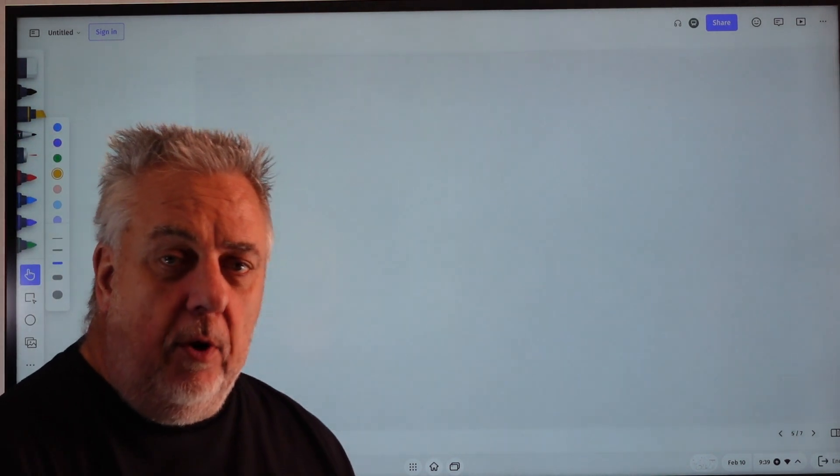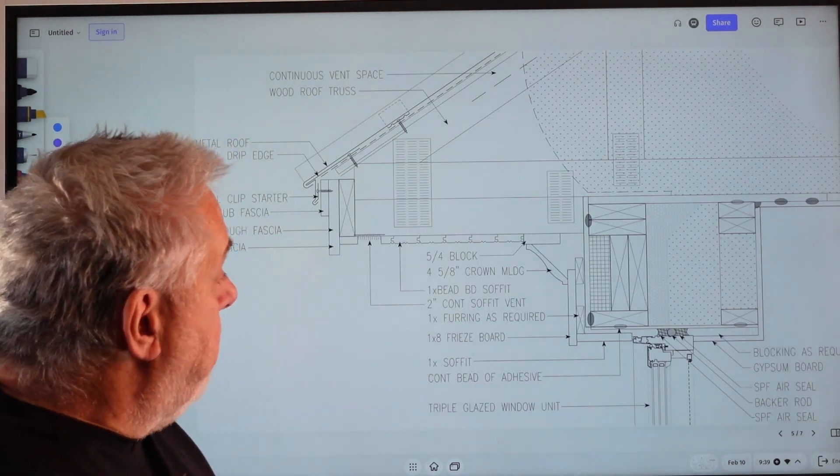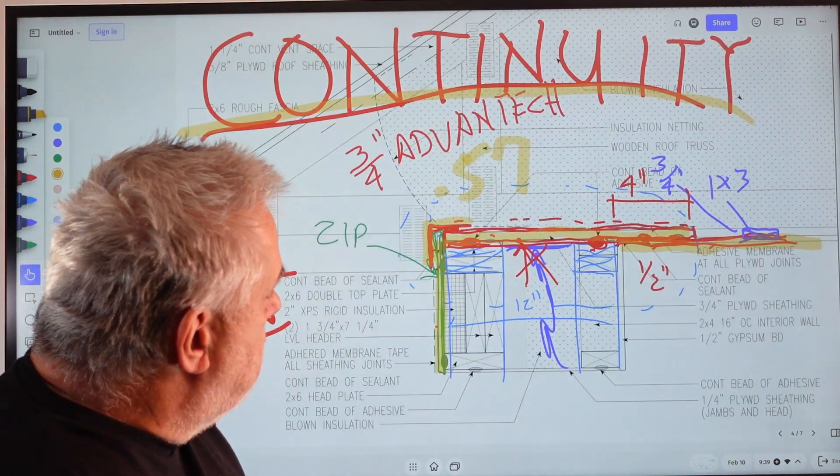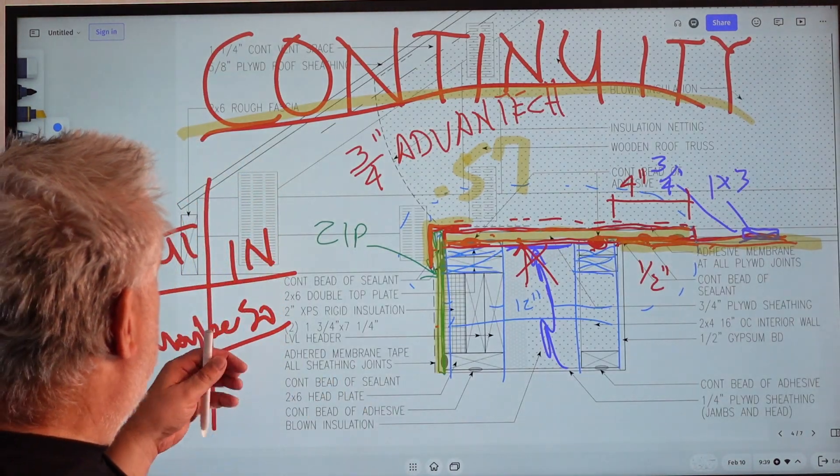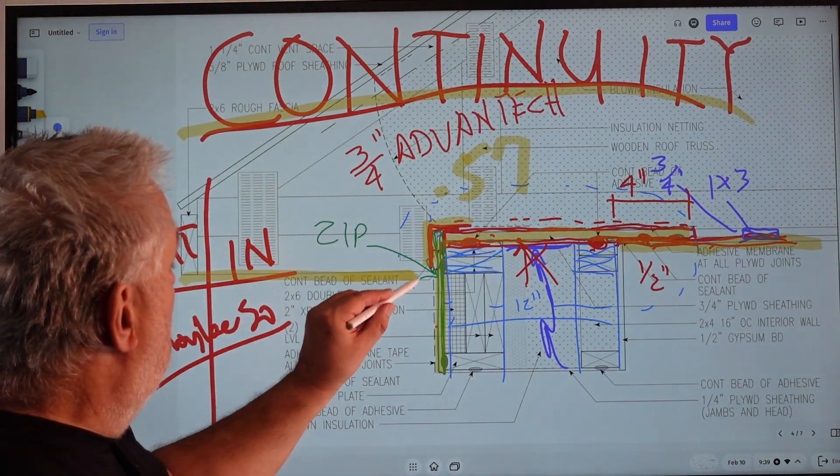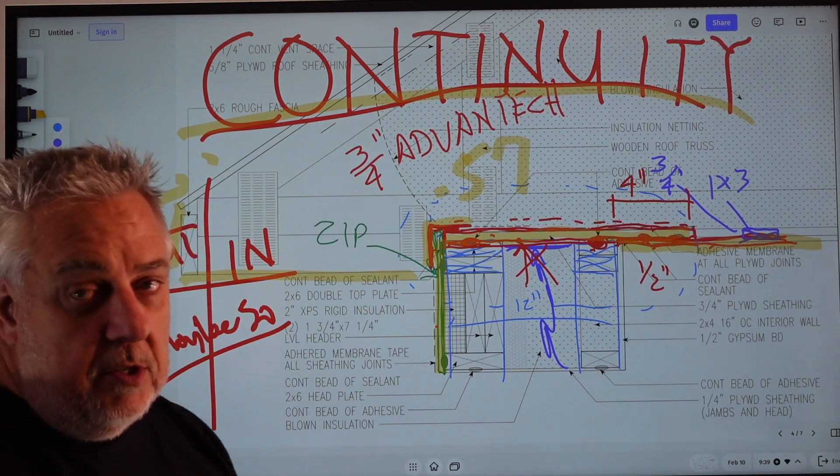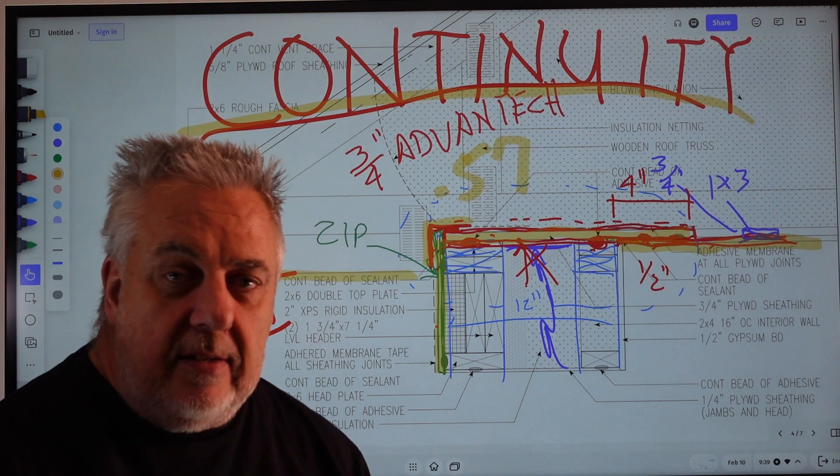Let's take a look at a few photos that support what's happening here. One of the things about these drawings that I learned - notice on here, there is no soffit, there's no fascia, there's no metal drip edge, no reference to the roof. None of that stuff. Why?